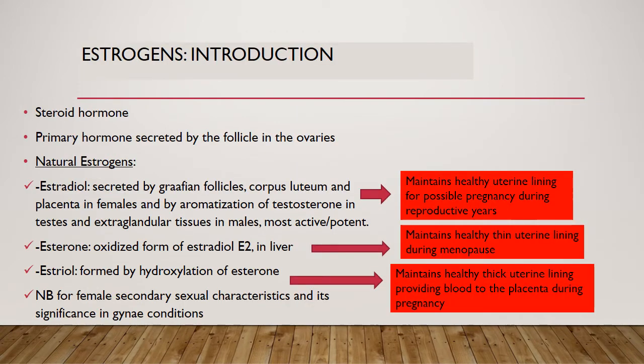Estrogen is a steroid hormone and the primary hormone secreted by the follicle in the ovaries. Natural estrogens, of which estradiol is the most active and potent form, are secreted by the Graafian follicles, the corpus luteum, and the placenta in females, and by aromatization of testosterone in the testes and extraglandular tissue in males.